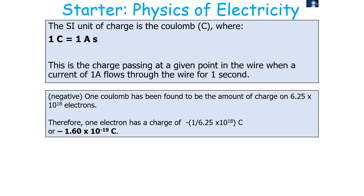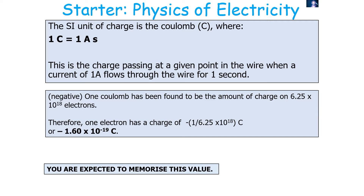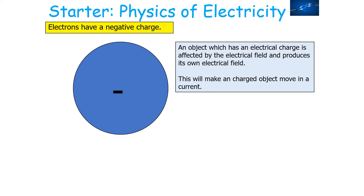1 coulomb has been found to be the charge of 6.25 times 10 to the 18 electrons. Therefore, 1 electron has a charge of 1 over this value, which is 1.6 times 10 to the minus 19 coulombs. This charge of an electron is a value we're expected to memorise. An object which has an electrical charge is affected by the electrical field and produces its own electrical field, which makes a charged object move in a current.